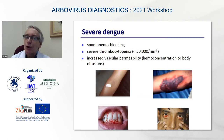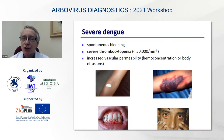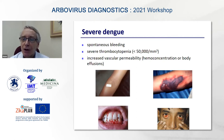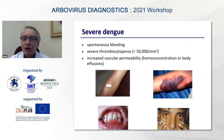Severe dengue, when it occurs, is accompanied by spontaneous bleeding, severe thrombocytopenia, and increased vascular permeability. This leads to body effusions in the chest or abdomen and hemoconcentration easily recognized by hematocrit counts. Signs of bleeding can occur at different sites, and clinicians should be very keen to recognize them early. Risk of progression to shock is considerable and can lead to high mortality.